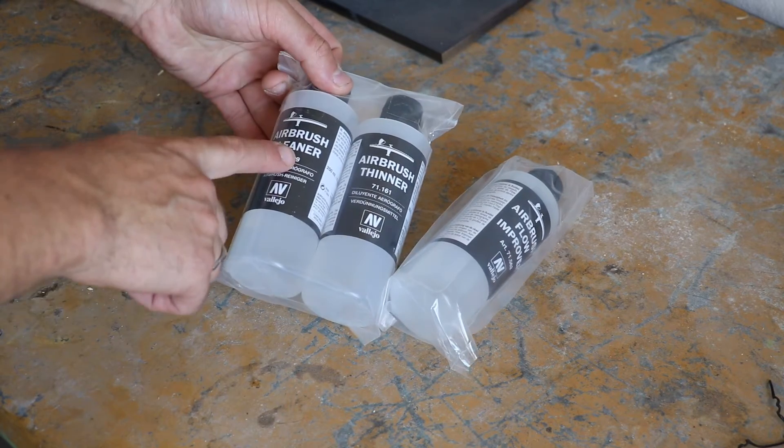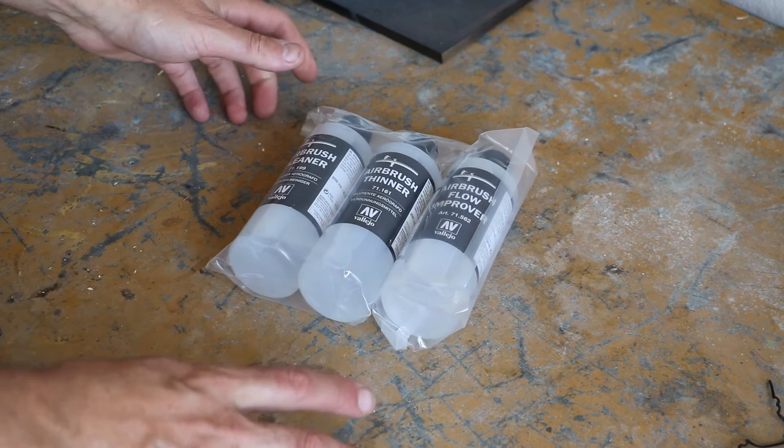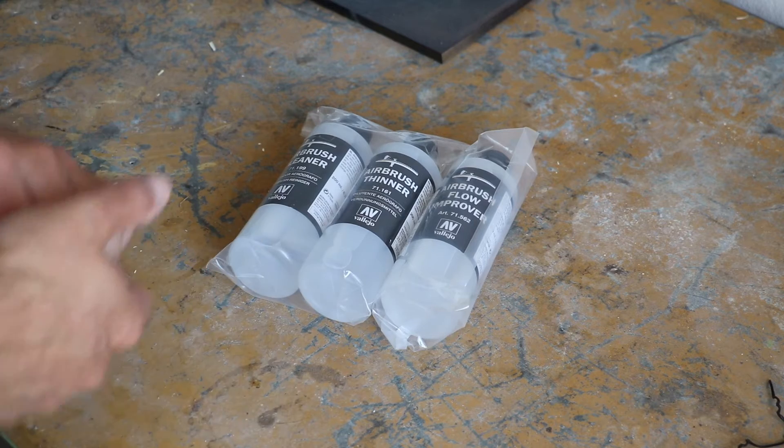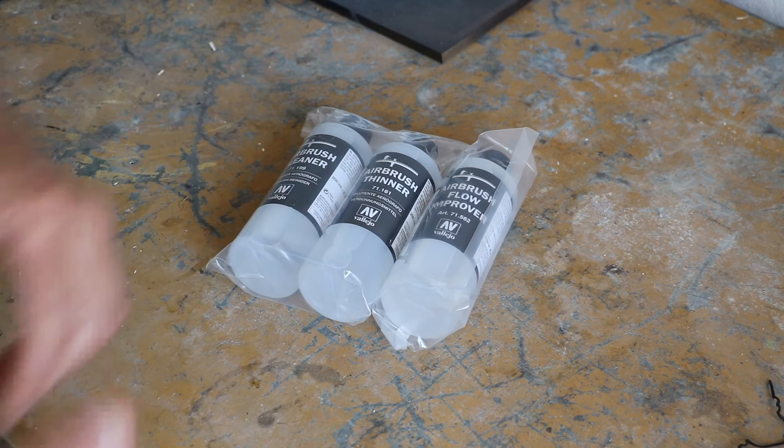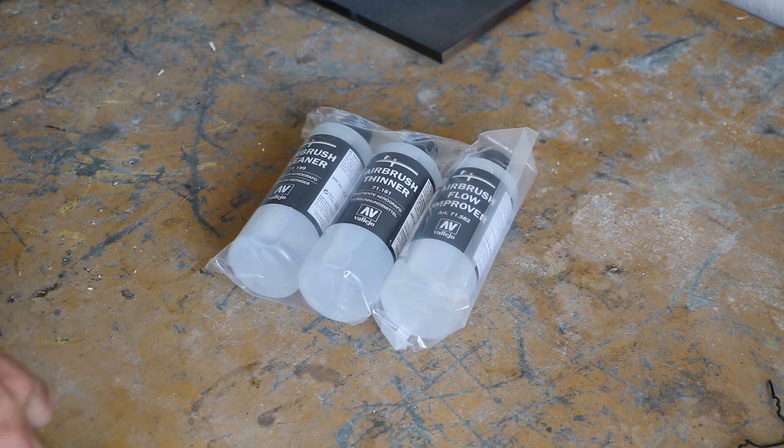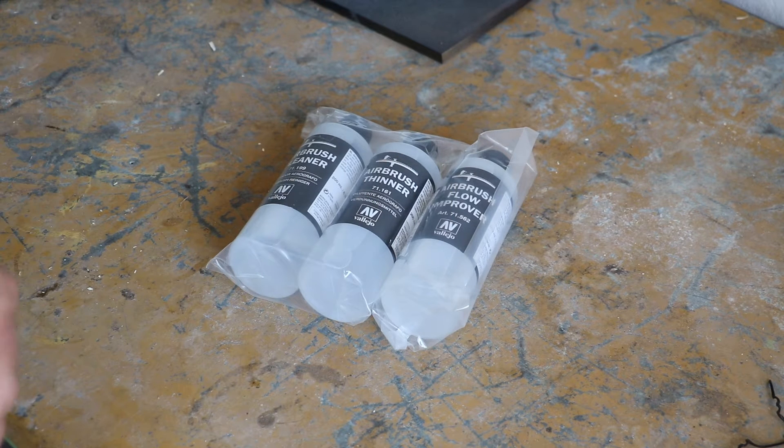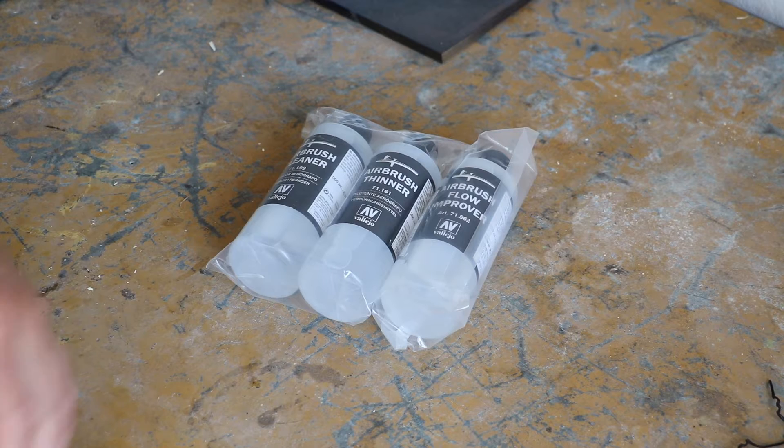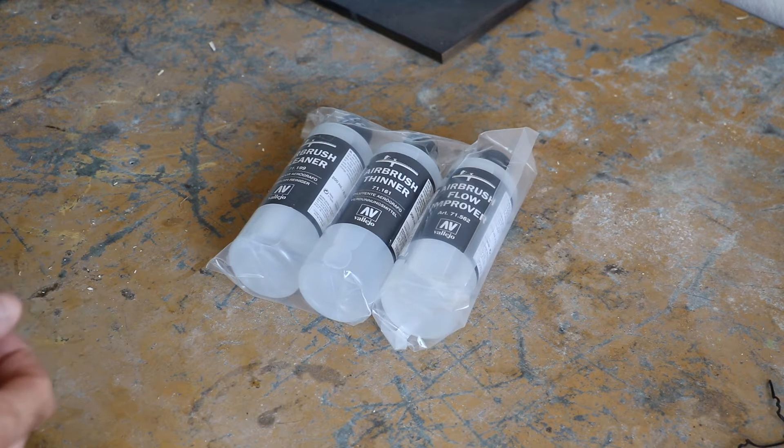So I've got some airbrush cleaner, some airbrush thinner and some airbrush flow improver. Now these obviously have three different purposes. Cleaner is obvious but the difference between thinner and flow improver is something which confuses me a little bit and I'm sure confuses a few people so I will go into that in more detail a bit later on.